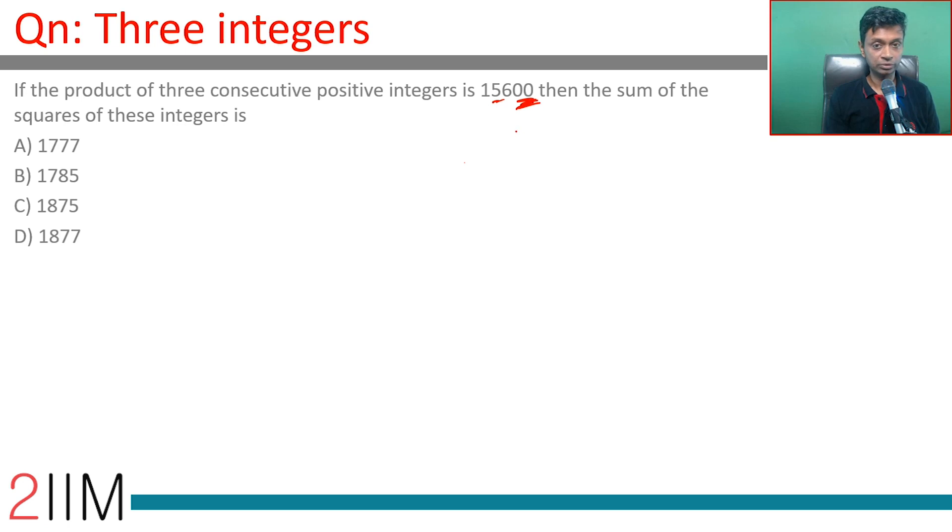The product has two fives in it. We're not just 1525. 156 is 12 into 13. 15600 is 12 into 13 into 100.